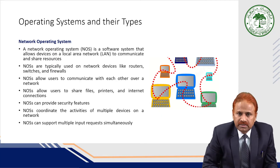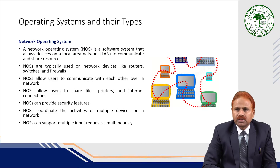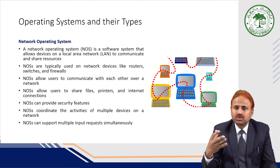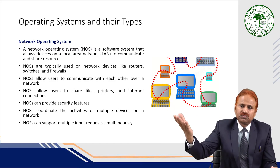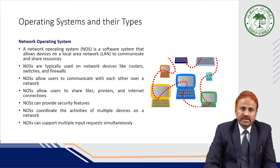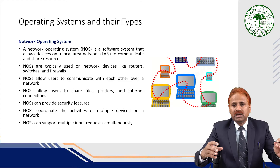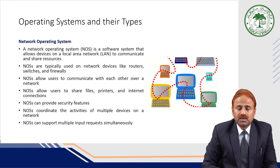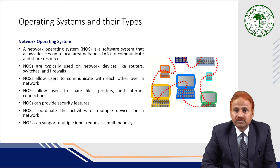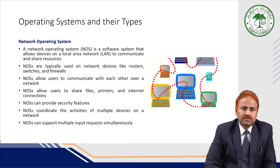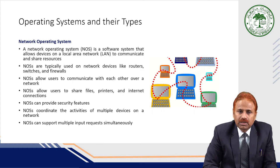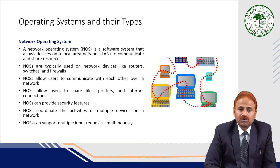Next is the network operating system. In a computer network, several computers are connected with each other, and the main purpose is resource sharing — sitting at one computer, you can use resources available on other computers. A network operating system is software that allows devices on a local area network to communicate with each other and share resources. Network operating systems are typically used on network devices like routers, switches, and firewalls, and allow users to share files, printers, and internet connections, and can provide security features.